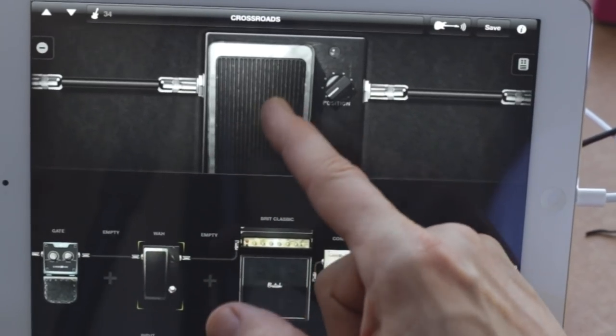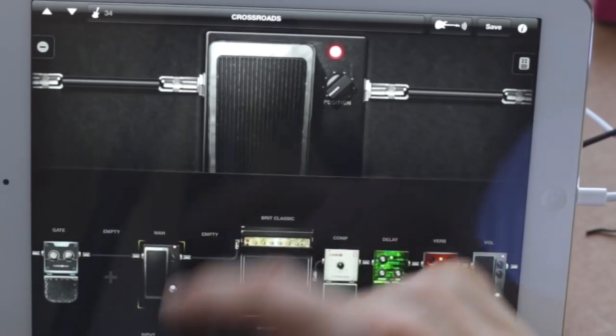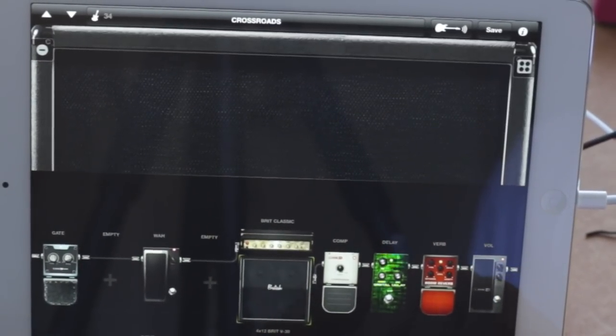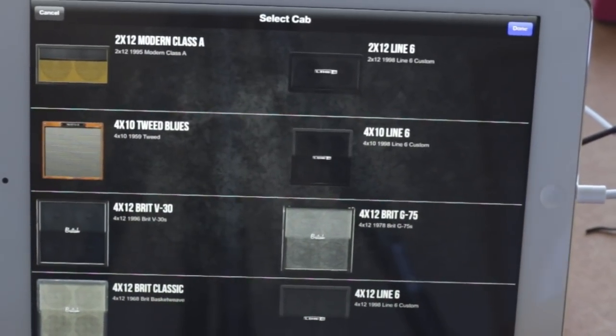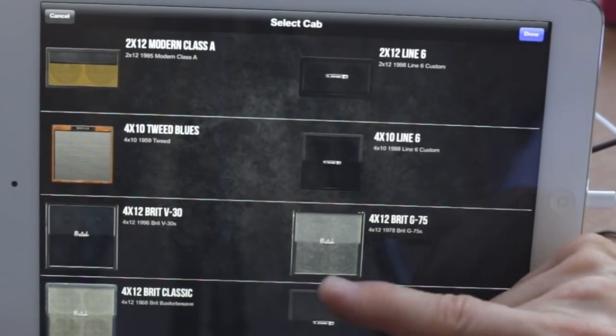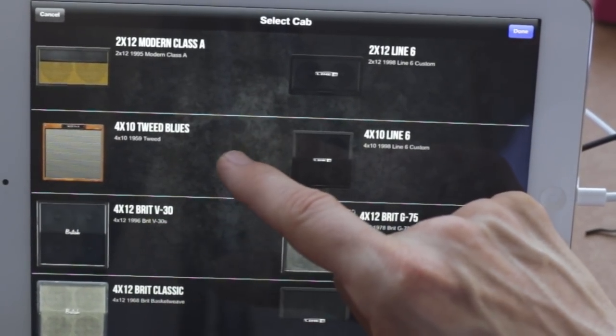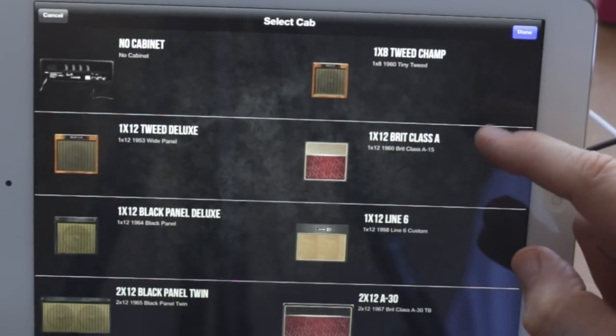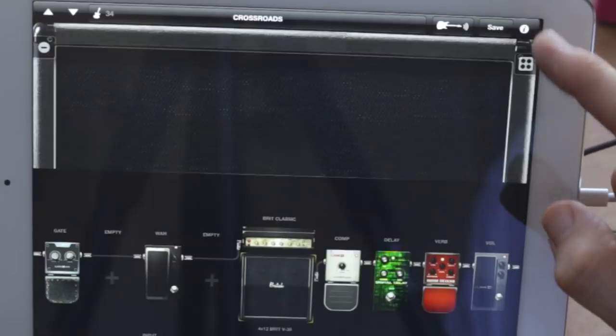Here's another empty slot, here is the cabinet. So if you press here we can probably change the cabinets, yep that's how it works. So really easy to figure out. So we have a 4x12 British Classic, we have a 4x12 Brit V30, a Tweed Blues 2x12, 2x12 inch, 4x10, so there's a good amount of amps here. There's a combo amp, so a lot to work with, even one without a cabinet, which is great, because then when you route this signal to your own amp it doesn't get colored with one of those amp presets.